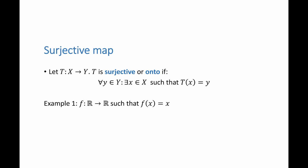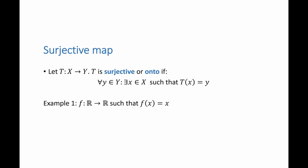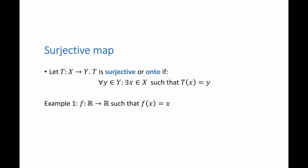As an example, the function defined from R to R such that f of x is equal to x is surjective because if I pick any element here, I can always find a pre-image in the set R.